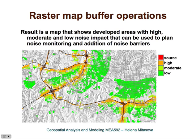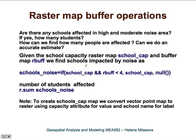Using this map we can, for example, plan further noise monitoring to determine whether there is really high noise impact and addition of noise barriers if necessary. We can ask additional questions, such as whether any schools are affected in the high and moderate noise areas — meaning instead of overlaying the buffer with a raster map we overlay it with a point map — and also how many people live in this high noise area.